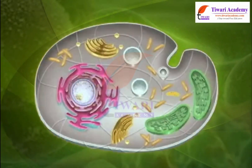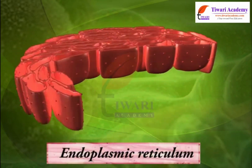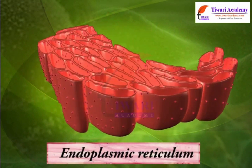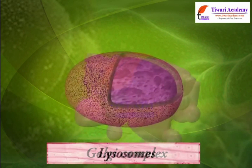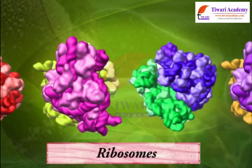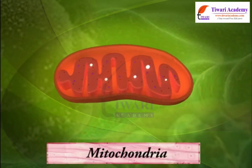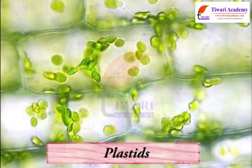The cytoplasm is the part of the cell that surrounds the nucleus. It is the portion containing the various organelles that perform different functions for the cell. These organelles include the endoplasmic reticulum (ER), Golgi complex, lysosomes, microbodies, ribosomes, mitochondria, and plastids.